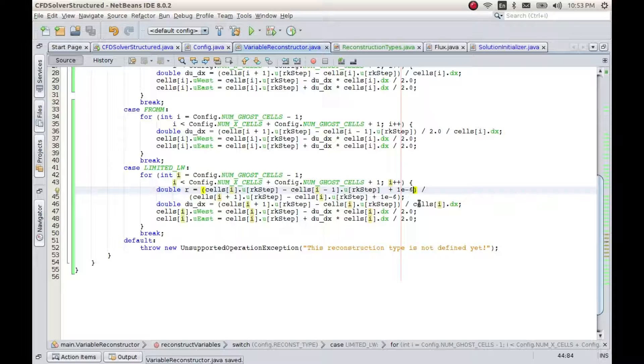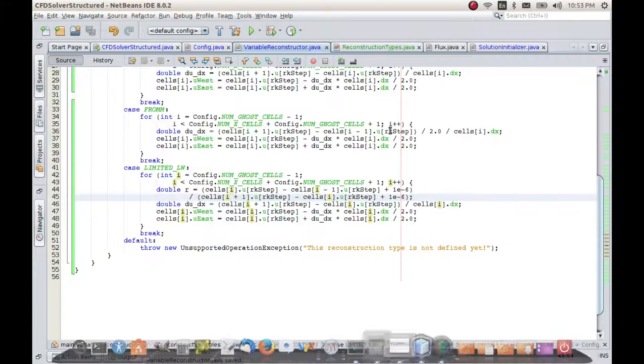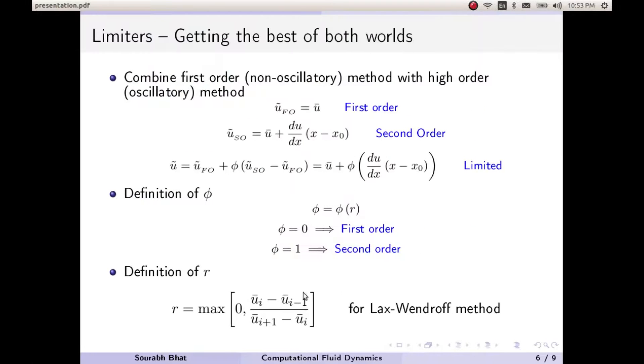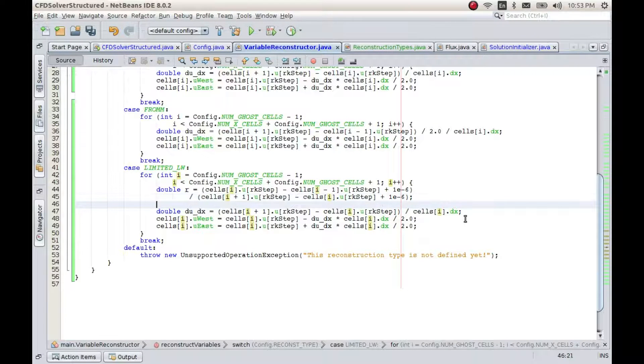Adding in the numerator is not required, but it's okay since it's a very small quantity. Also, we have to take the max of zero and this value, so r equals max of zero and r. Now we have our value of r.